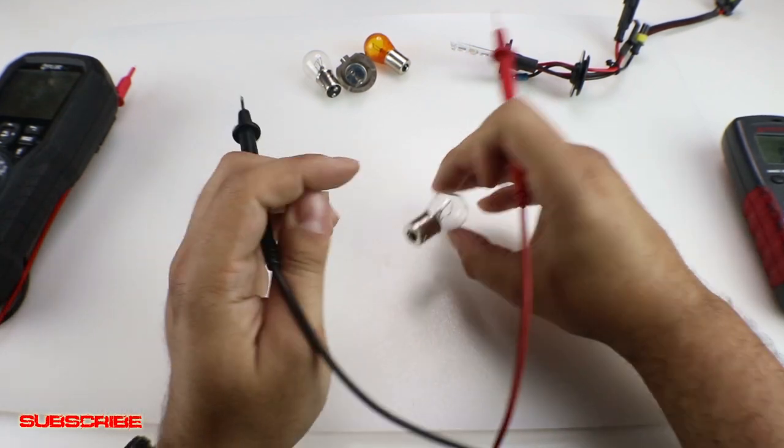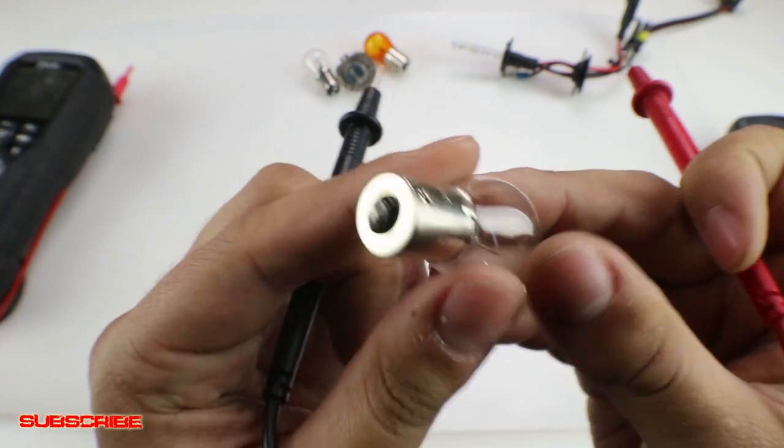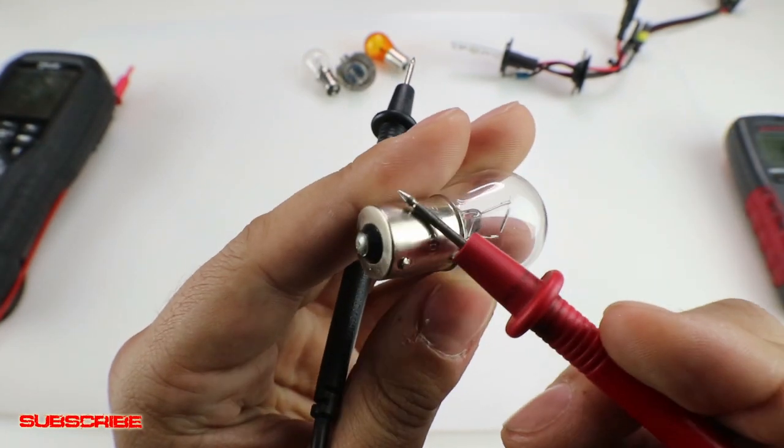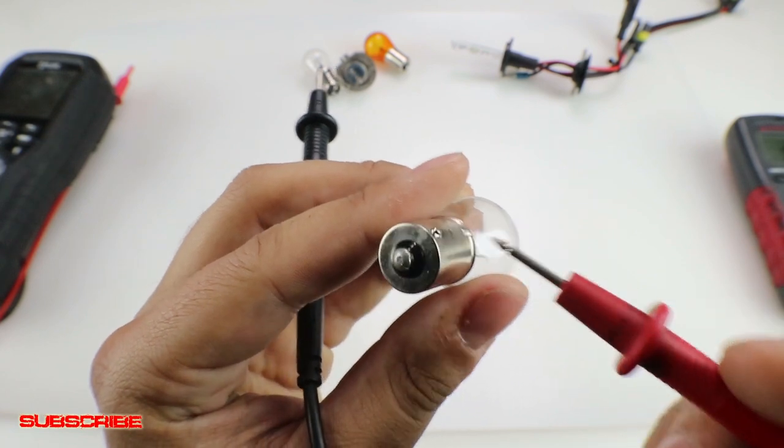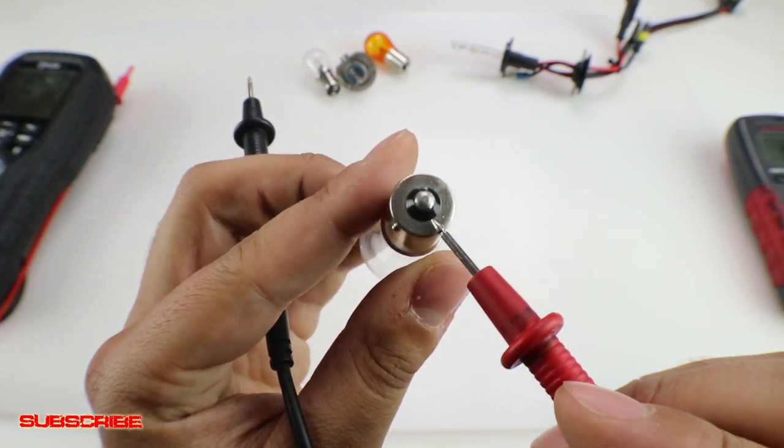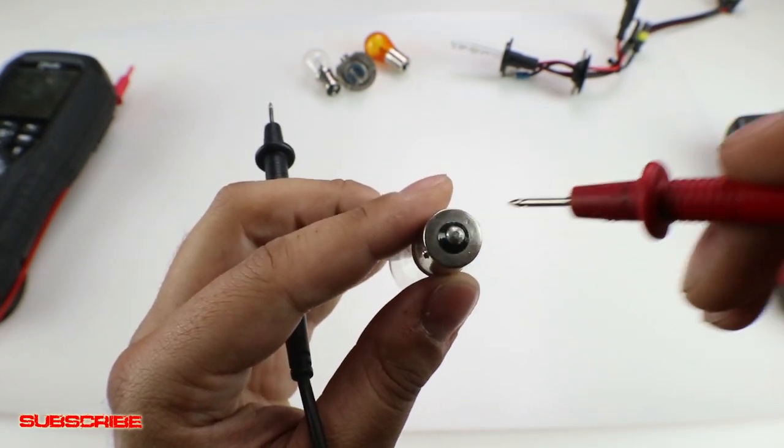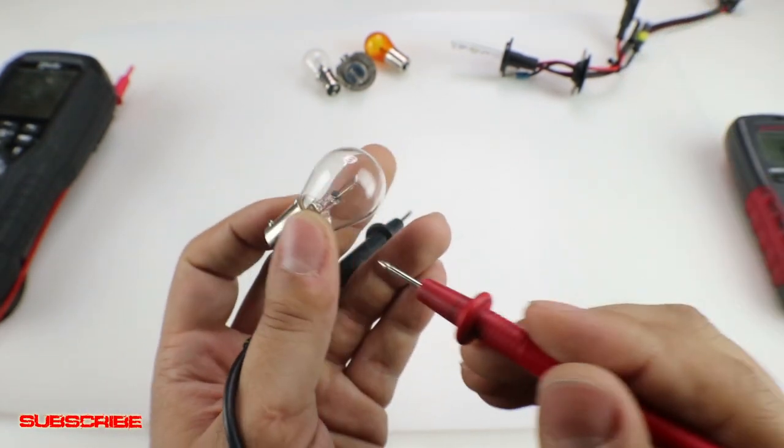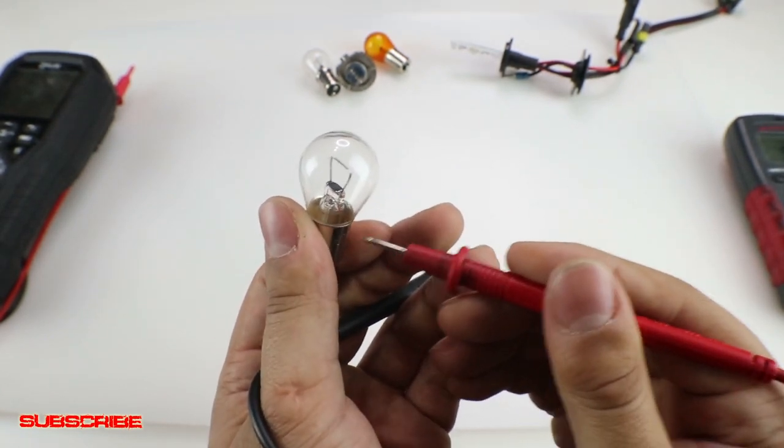So on the end you're gonna notice, and I'll bring this up a little bit closer for you, on the end you're gonna notice you have this metal casing which is essentially the ground or the negative, and then you have this little metal part right in the middle and that is going to be your positive.